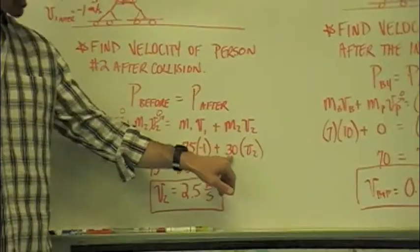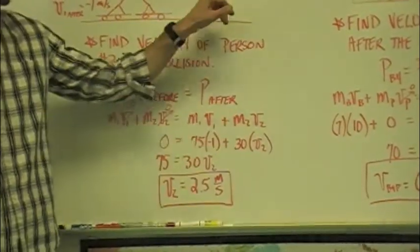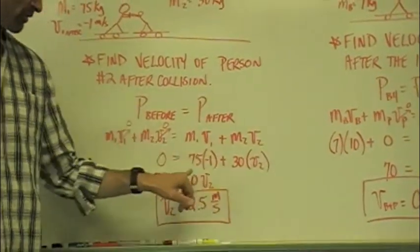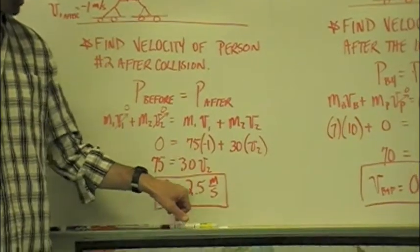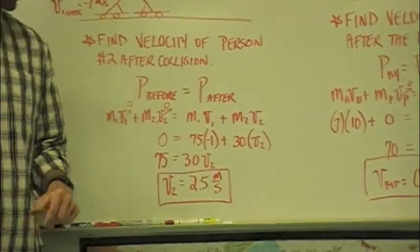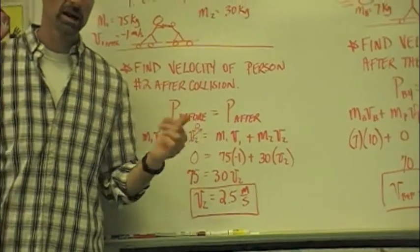and then plus, after the collision, we got 30. We're looking for the unknown velocity. We solve for that. We come up with a velocity of 2.5 meters per second.